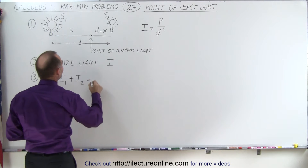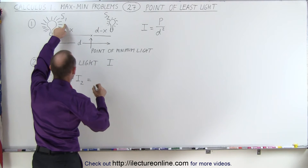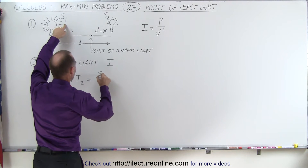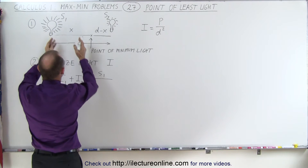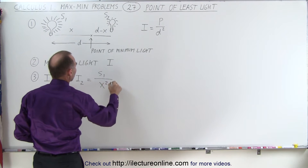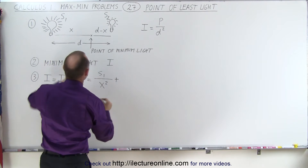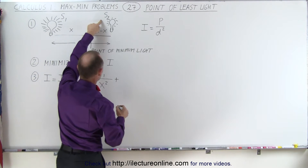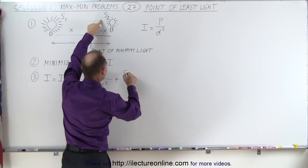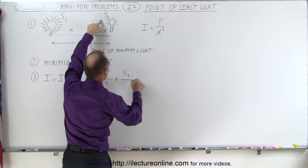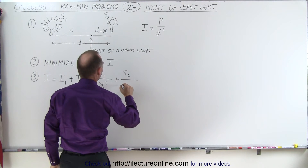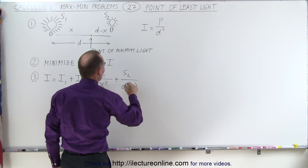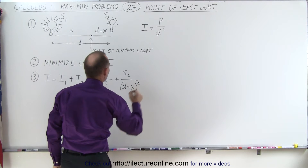So the equation would be: I is equal to the power of the first source, S1, divided by the distance squared, which is x squared, plus the power of the second light, S2, divided by the distance squared, which is d minus x, quantity squared.